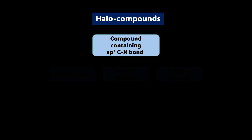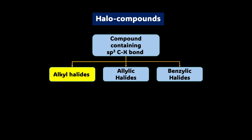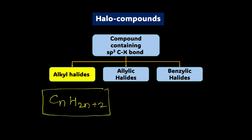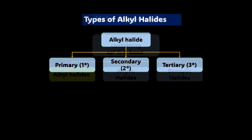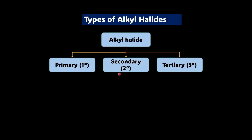What are alkyl halides? Like the name suggests, we are going to have an alkane — CnH2n+2. From this alkane, if you remove one hydrogen and put a halogen instead, that gives you an alkyl halide. Now, there can be different degrees to this alkyl halide — there can be a primary alkyl halide, a secondary alkyl halide, and a tertiary alkyl halide.